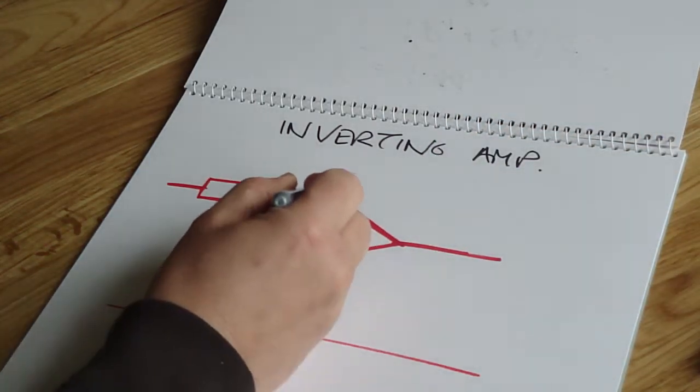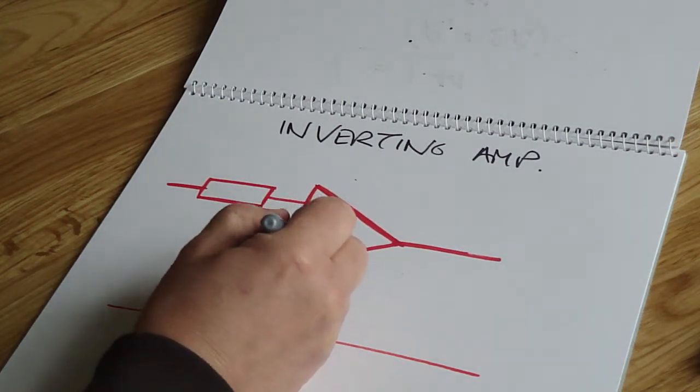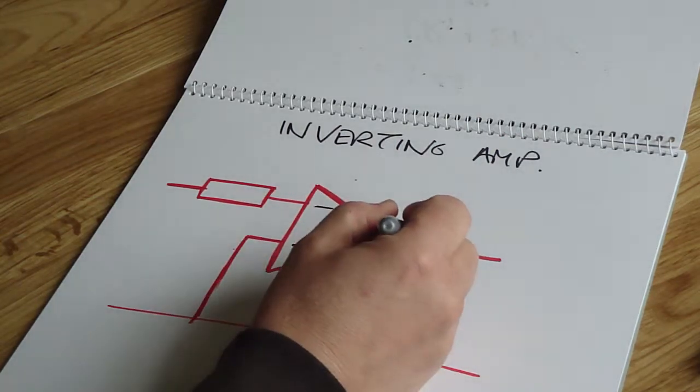You're familiar with this shape being an amplifier. That's the minus pin or the inverting pin, that's the positive pin or the non-inverting pin, this is the output pin.